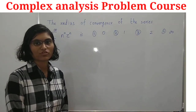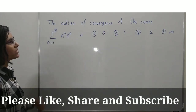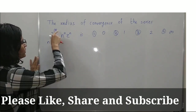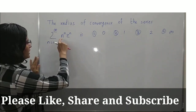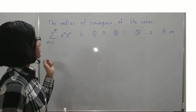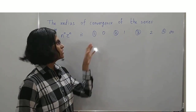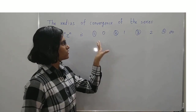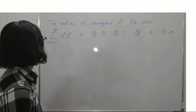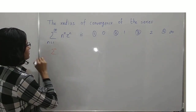The next question is about the radius of convergence of a series. We have the series summation where n runs from 1 to infinity of n^n times z^n, and we are asked about the radius of convergence. The options are 0, 1, 2, and infinity.